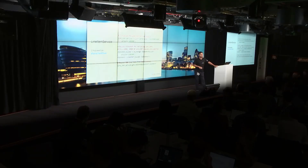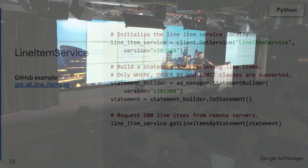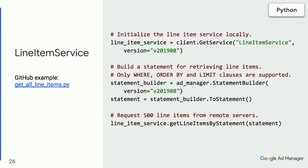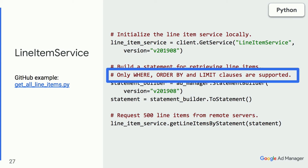To get the first 500 line items, you start by creating a local instance of the service and then build a statement. Lastly, you call the service to get the line items by the statement. One thing to note is that you can only specify the WHERE, ORDER BY, and LIMIT clauses of the statement. The SELECT part is missing because the service will always return the complete list of properties.